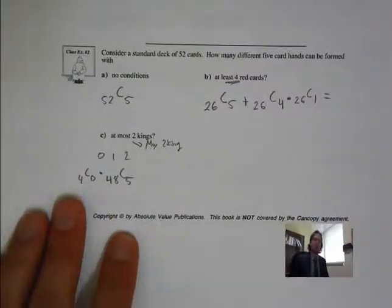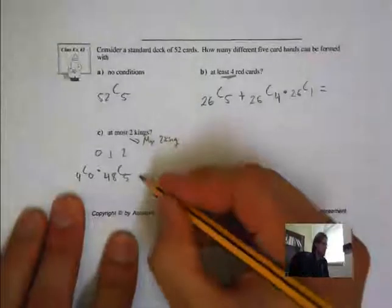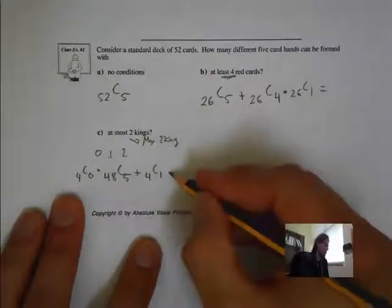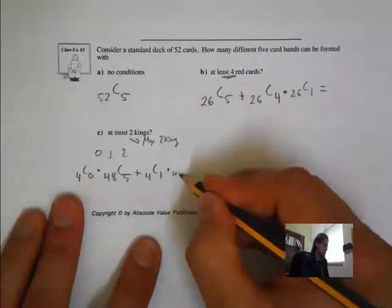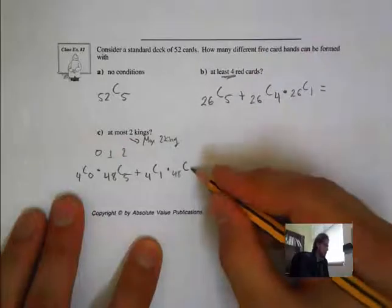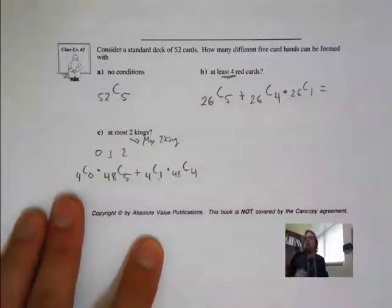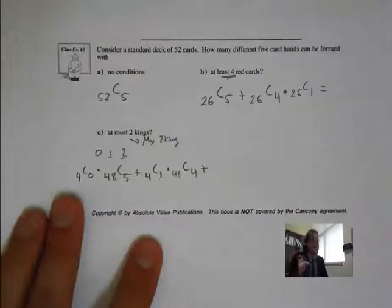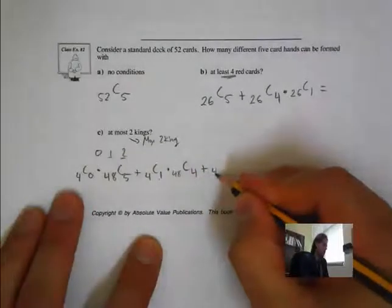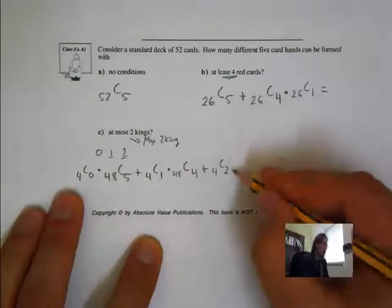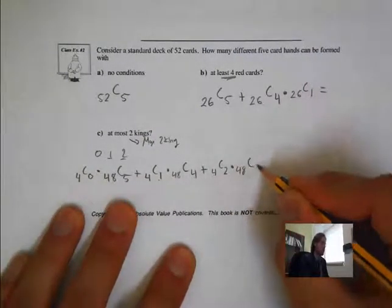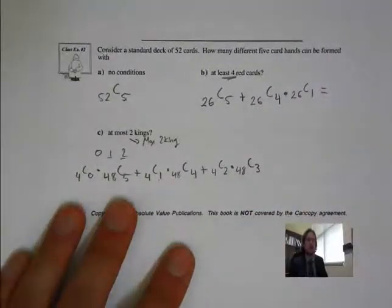For 1 king: 4C1, and there are 48 other cards besides kings — we're choosing 4 other cards, so 4C1 × 48C4, making our hand of 5. The last option is 2 kings — at most 2 kings, that's the max. So out of 4 kings, we want 2. And out of 48 other cards, we need 3 others to make up our hand, so 4C2 × 48C3.